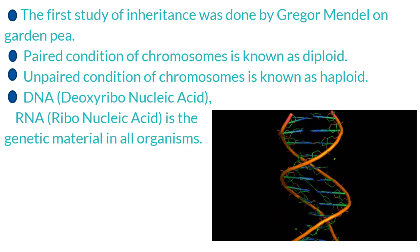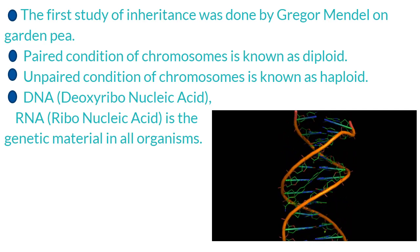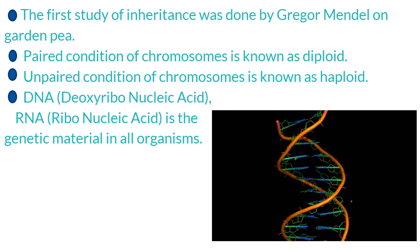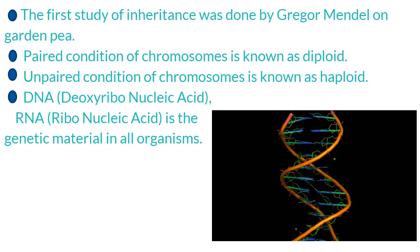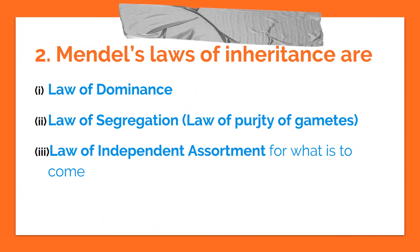DNA stands for deoxyribonucleic acid. RNA stands for ribonucleic acid. Mendel's Laws of Inheritance are: Law of Dominance, Law of Segregation, Law of Purity of Gametes, and Law of Independent Assortment.